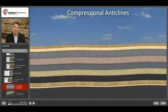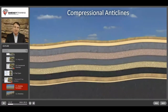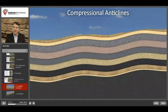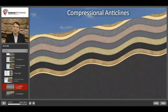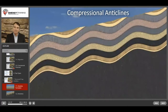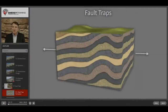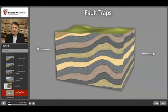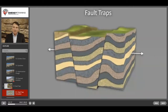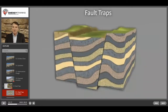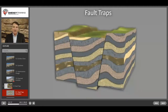Here's an example of compressional anticlines. As the Earth's crust is compressed, it buckles and uplifts, and elevated portions at the surface will eventually be eroded. Faulting can be caused either by forces that stretch the Earth's crust or compress the Earth's crust. Here's an example where the Earth's crust is stretched and it causes a fault block to slide down, causing some impermeable layers to block the oil and gas flow in some porous and permeable layers.